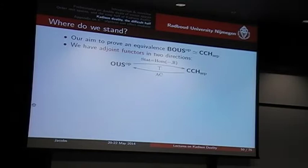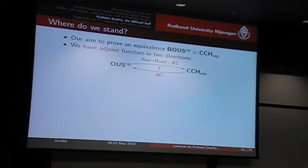We have seen last time there is an adjunction going in both directions, taking states from all the order unit spaces. Please note there's no completeness here yet, no Banach requirement. And in the other direction, you take applying continuous maps to the reals.